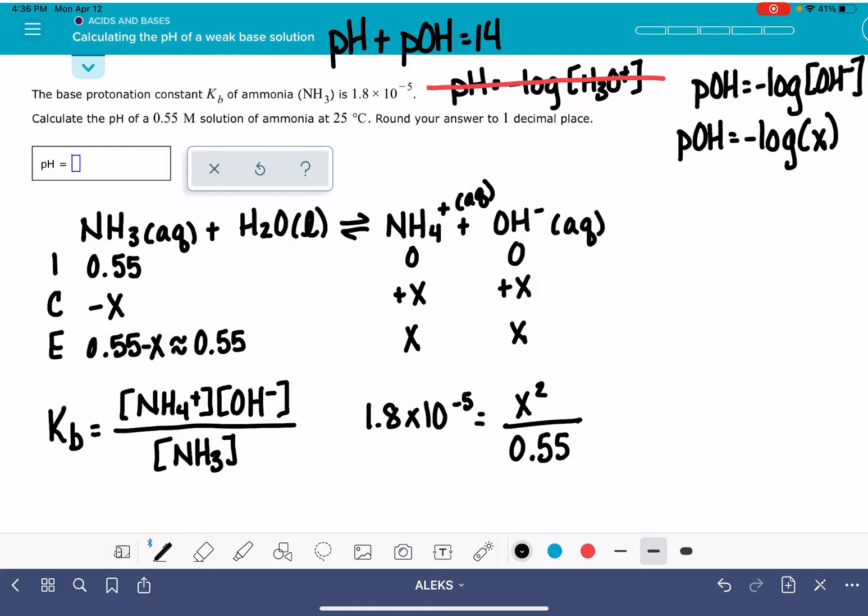Now we just need to solve for X. I'm going to go 1.8 times 10 to the minus 5 times 0.55. That's equal to X squared. So I'm going to take the square root of that. X equals 0.003146.